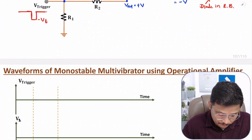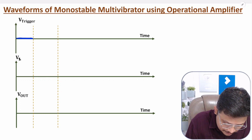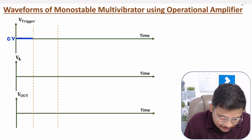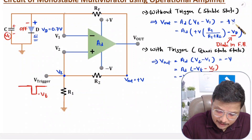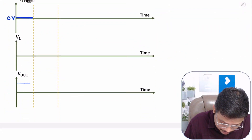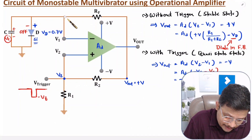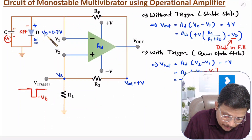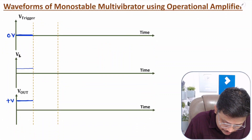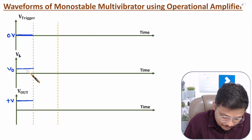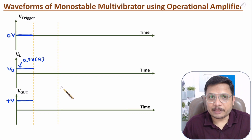Now let me explain with waveforms. In the first scenario, we don't give any trigger, meaning zero voltage at the trigger input. At that time we have stable state, so Vout is plus V. V1 at that time is VD voltage because the diode is in forward bias — approximately 0.7V for a silicon diode.